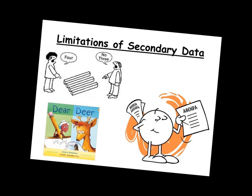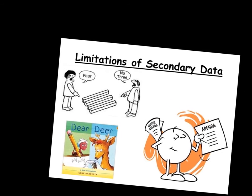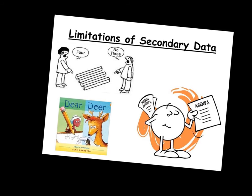The limitations of secondary data: quite often they have a hidden agenda. Official statistics might be created by the government, and the government is a political party that wants to be kept in power. This hidden agenda compromises the reliability and validity of the data, which the sociologist has to be careful of when using secondary data.